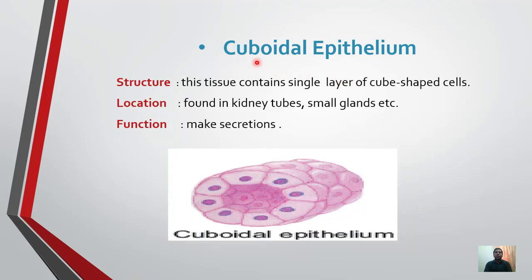Second type is cuboidal epithelium. Structure: this tissue contains a single layer of cube-shaped cells, which is why they are termed cuboidal epithelium. Location: found in kidney tubes and small glands. Function: they make secretions.